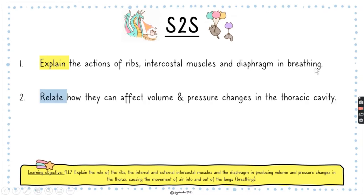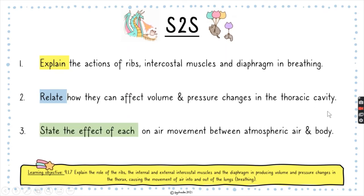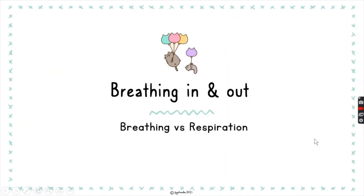Our steps to success today are: firstly, to explain the action of the ribs, intercostal muscles, and the diaphragm in breathing; secondly, to relate how they affect volume and pressure changes in the thoracic cavity; and thirdly, to state the effect of each on air movement between atmospheric air and the body.